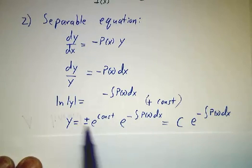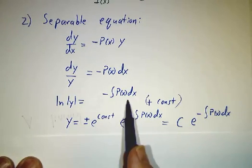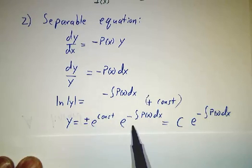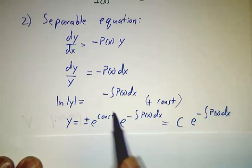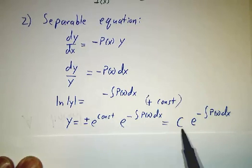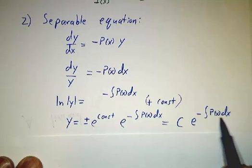And so y is, you exponentiate both sides. You get rid of the absolute value by putting in a plus or minus. And you get y is some complicated constant e to the minus integral of p dx. In other words, a constant e to the minus integral of p dx. It's the same answer.